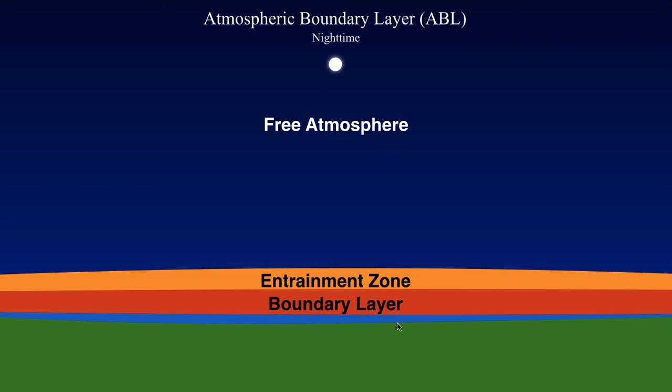That's going to do it for this first segment on the boundary layer — just a first look at how it forms, what its characteristics are, and what the typical diurnal cycle is. In the next segment, we're going to talk a little bit more about the idea of turbulence. I will see you all there.